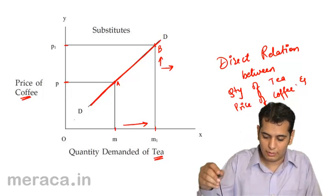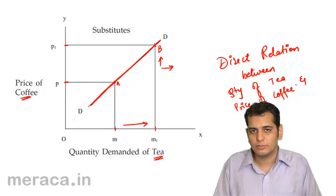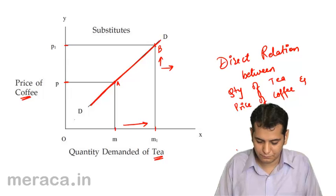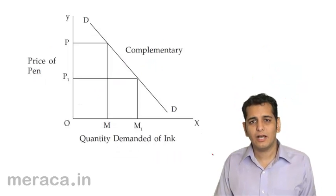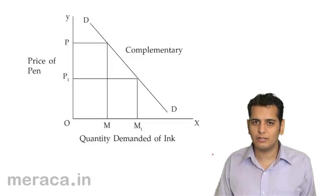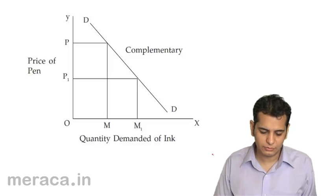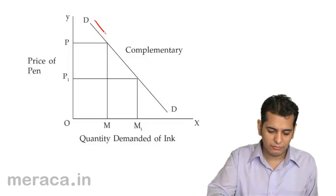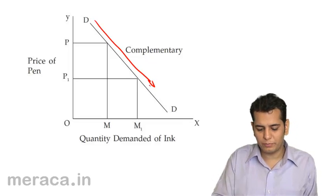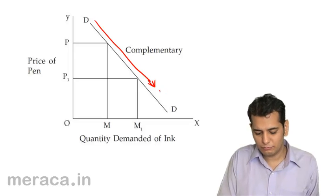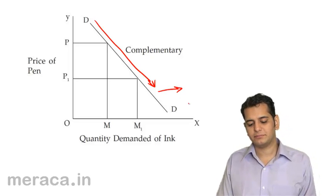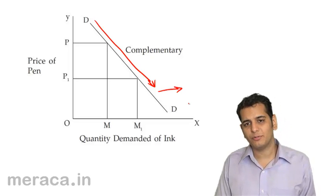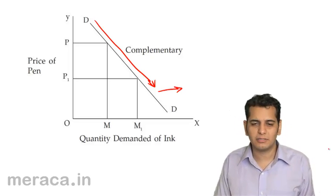Thus, we get an upward sloping curve which slopes from left to right for substitutes. Now let's see how the demand curve looks for complementary goods. For complementary goods, the demand curve is downward sloping from left to right — just like a normal demand curve. Why does it slope downward? Let's see.